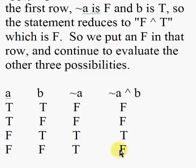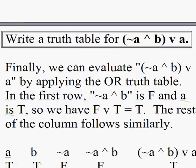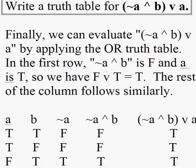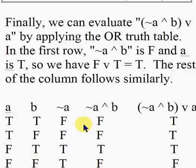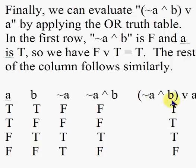Now let's go to the last column. Recall that our question said to write a truth table for the quantity (~a ^ b) v a. So finally we can evaluate that statement by applying the OR truth table.